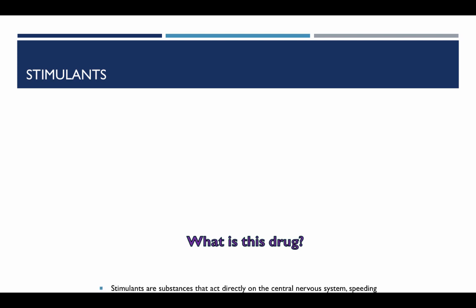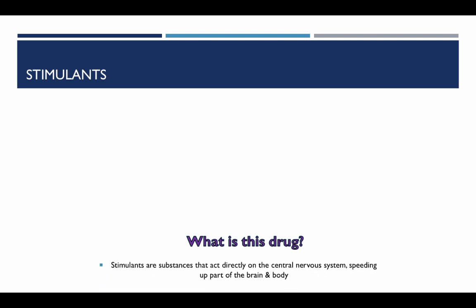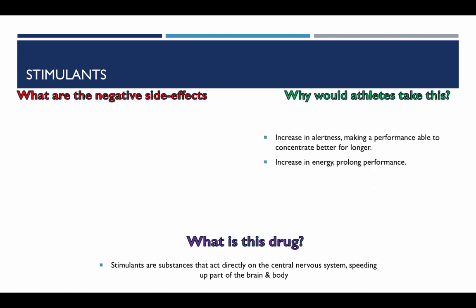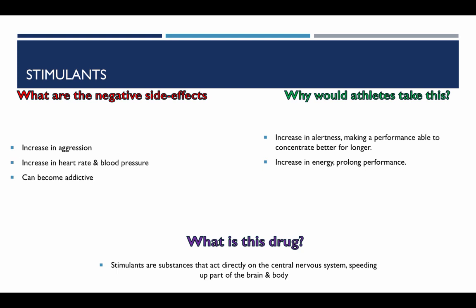Stimulants. What is this drug? Stimulants are a substance that act directly on the central nervous system, speeding up a part of the brain and body. An athlete would take these to increase their alertness, making a performer able to concentrate better for longer, and an increase in energy to prolong performance. The negative side effects are an increase in aggression, an increase in heart rate and blood pressure, and can become addictive.